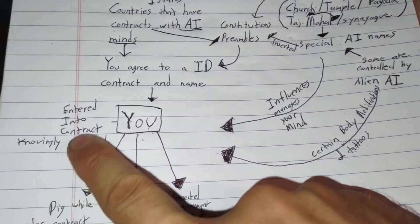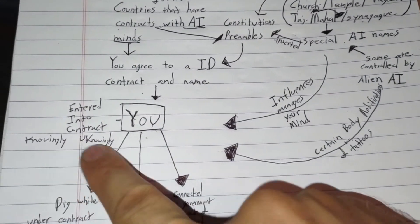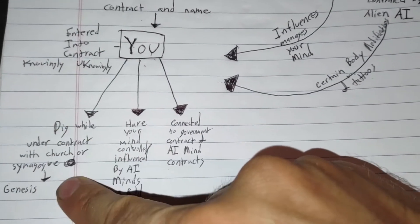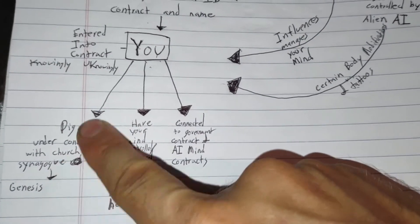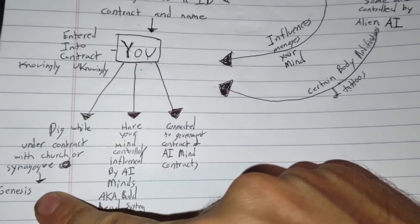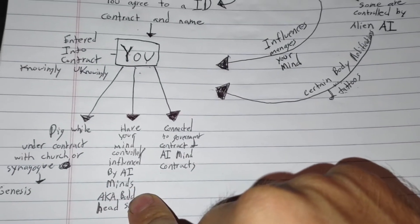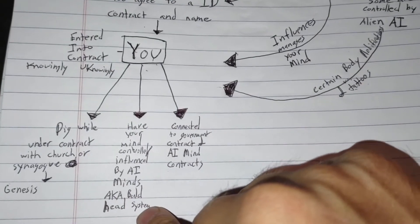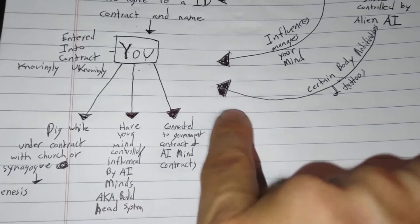Now you're entered into a contract, knowingly or unknowingly. So you've got these IDs. Now you dig under a certain contract, you have a hard life. You can have your mind controlled and be influenced by AI minds, a.k.a. bald head system.